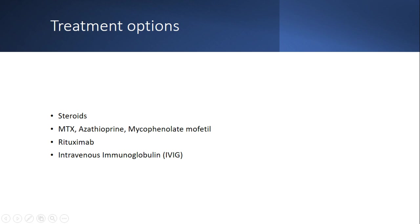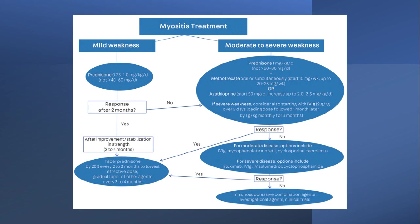Oral immunosuppressants are not appropriate in acute myositis presentations because they take six to nine months to take effect. IVIG is used acutely. For maintenance, treatment response assessment takes at least eight weeks before declaring treatment failure. Cyclophosphamide and other therapies with more side effects are available for refractory cases. Neurologists need adequate time — typically a couple of months — before deciding to escalate treatment.